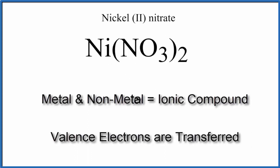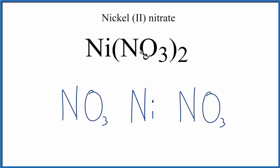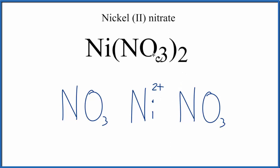So we'll write nickel in the center here, and then we'll put an NO₃ on either side. We can look at the name for nickel two nitrate and see this 2 in Roman numerals — that means nickel has a 2-plus charge. We can also look up the nitrate on a list of common polyatomic ions, and it will tell you that it has a negative charge. So we'll put a negative out here for each of the NO₃s.